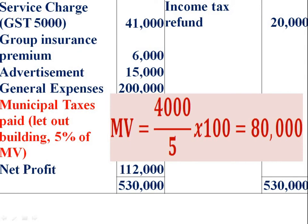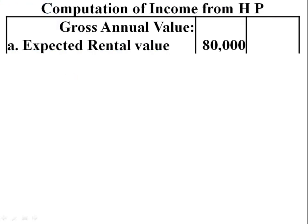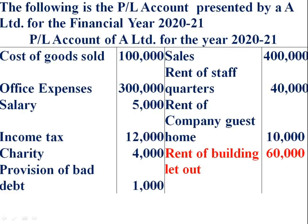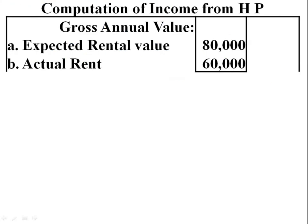Municipal tax paid being Rs. 4,000 is 5% of municipal value. Therefore municipal value = 4,000 ÷ 5 × 100 = Rs. 80,000. Expected rental value is Rs. 80,000. Actual rental received — rent of building let out is Rs. 60,000. Comparing A (Rs. 80,000) and B (Rs. 60,000), the higher figure Rs. 80,000 is the gross annual value.